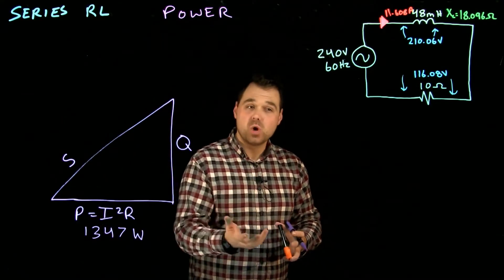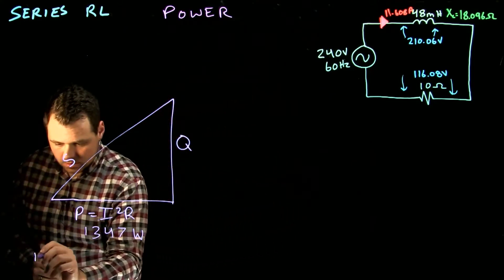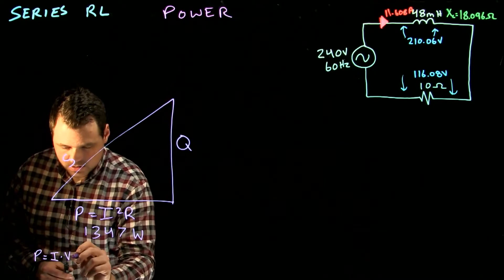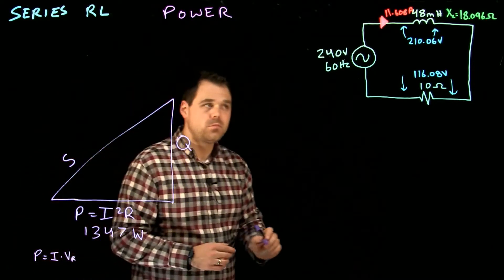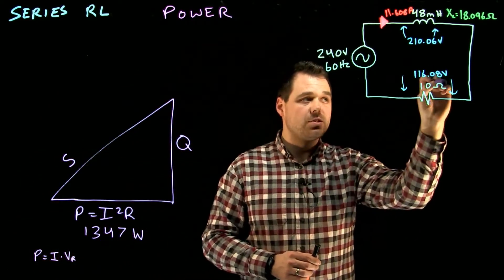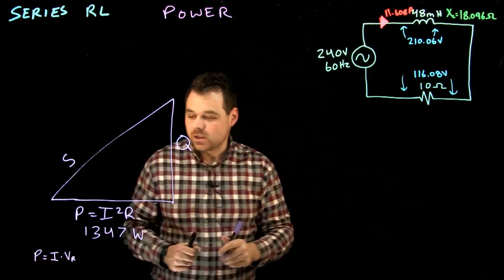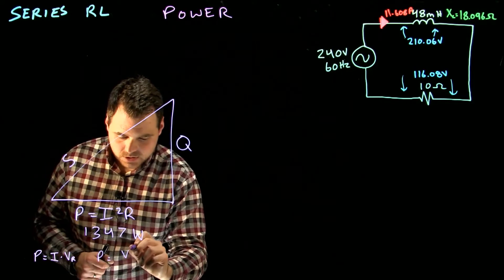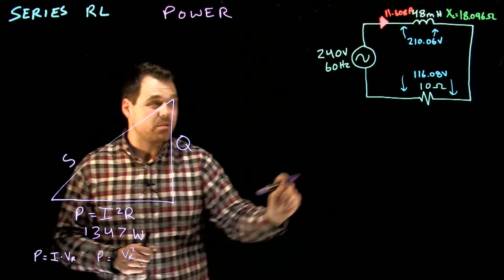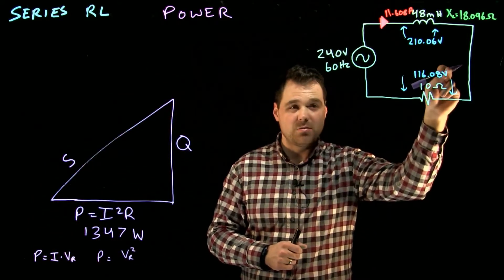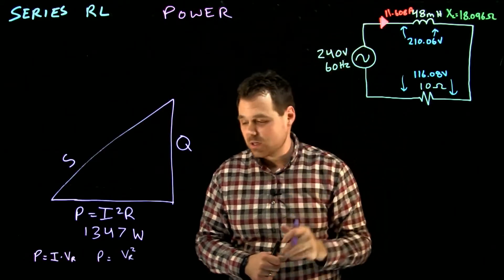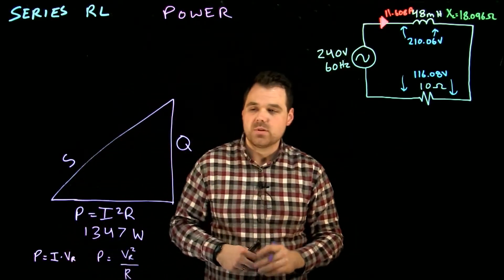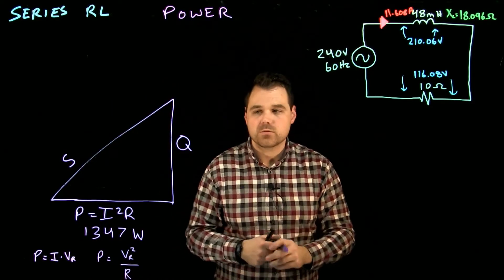I can go P equals I times V of the resistor. I have to use the voltage across the resistor to do that though. I can also go P equals V squared and that's voltage of the resistor, this 116.08 not the 240 volts, divided by the resistance. Those are two ways we can use and these formulas will carry throughout.